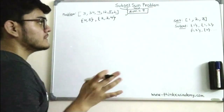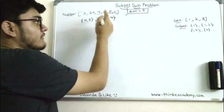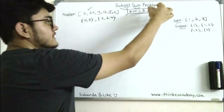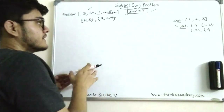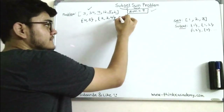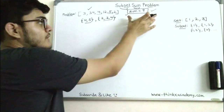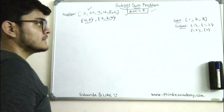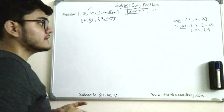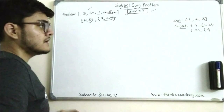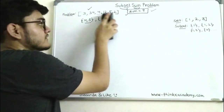The problem says you will have to write a function. You will provide a set and a number to that function, and the function will return whether there exists a subset which satisfies the required sum. Before writing the implementation, I first want to discuss how the function's logic will work.